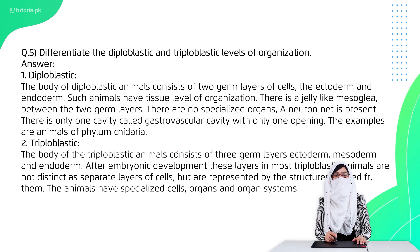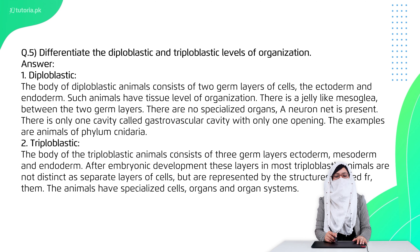Question 5 is: differentiate between diploblastic and triploblastic levels of organization. Diploblastic animals have two germ layers, and in the middle they have a jelly-like fluid which we call mesoglea. In triploblastic animals, there are three germ layers: ectoderm, mesoderm, and endoderm, and these three create certain organs and cells.